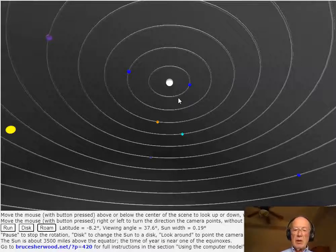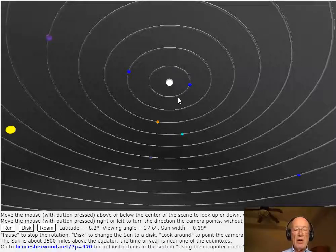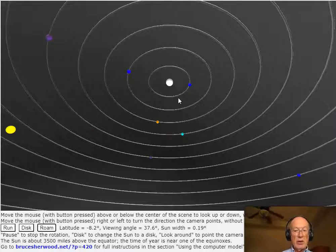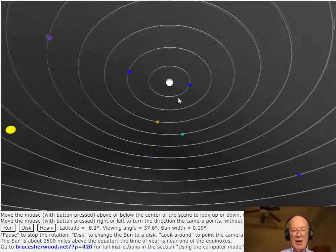Moreover, notice that in their model, if you go south of the equator, you can still see the North Star. But in the real world, you cannot see the Polestar from the Southern Hemisphere. So there are a lot of things that are wrong.